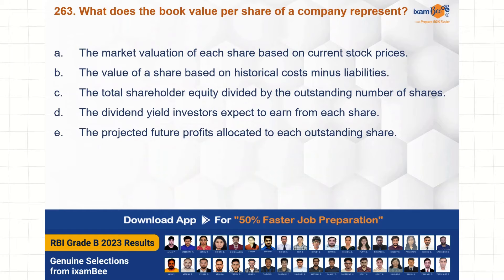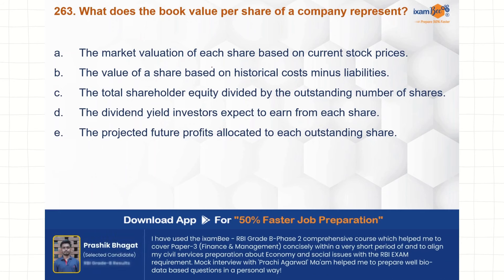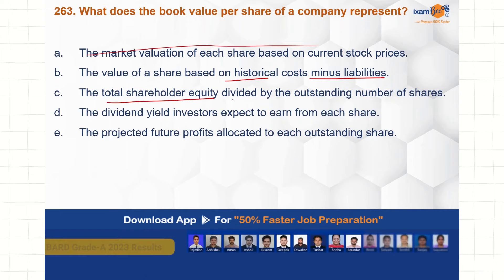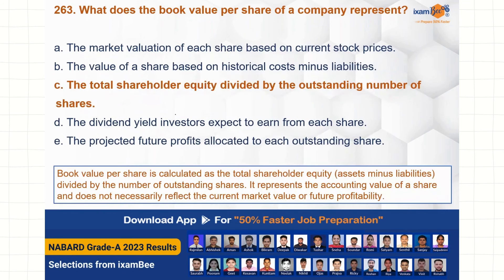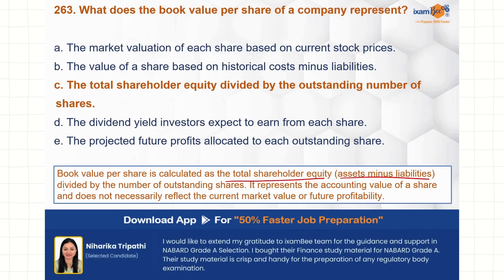What does the book value per share of a company represent? Option A — market valuation based on current stock prices — is incorrect. Option B — value based on historical cost minus liabilities — is not it either. Option C — total shareholder equity divided by outstanding number of shares — is the correct choice. Book value per share represents the accounting value of a share and does not necessarily reflect current market value or future prospects.